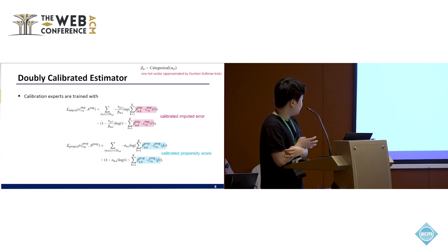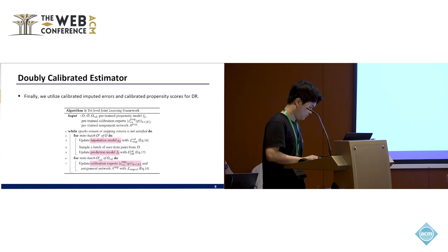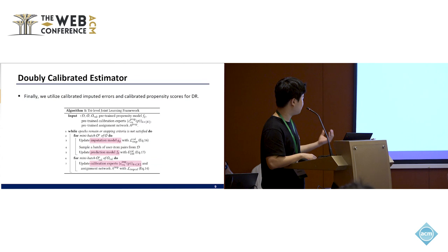So these calibration experts are trained with BCE loss. And then this calibrated imputed error and calibrated propensity score are adapted for the doubly robust estimator. And the calibration experts and the doubly robust estimator are trained simultaneously within our triple level joint learning framework.